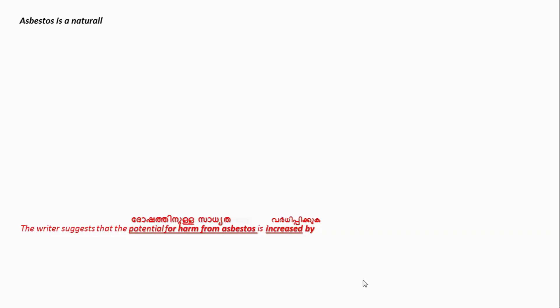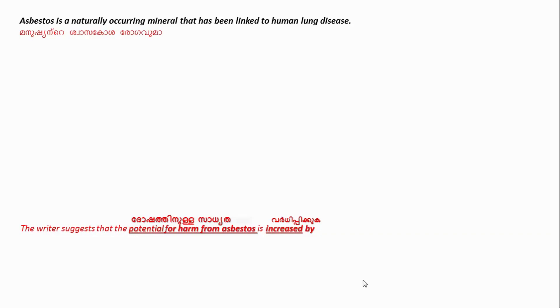If you look at the first sentence: asbestosis is a naturally occurring mineral that has been linked to human lung disease. So asbestosis is a naturally occurring mineral linked to human lung disease — that is what this sentence is saying.